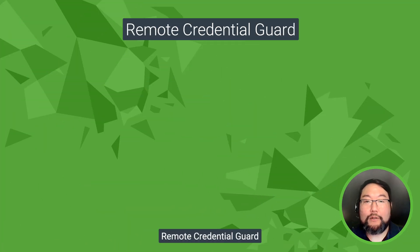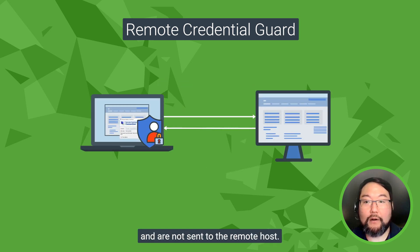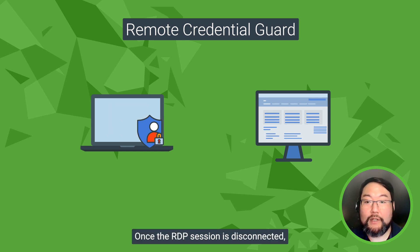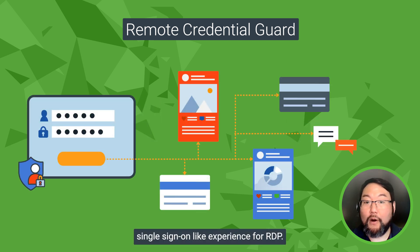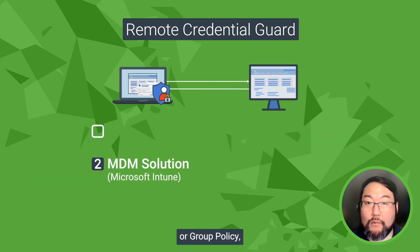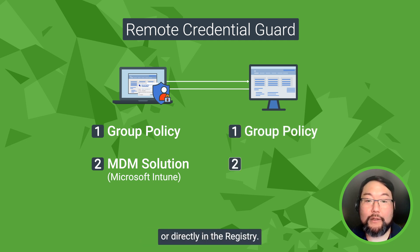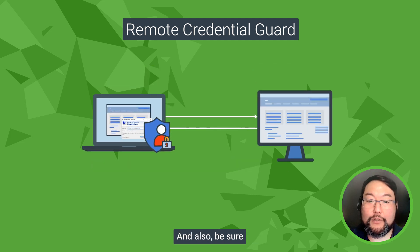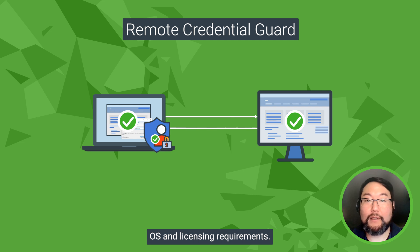To recap: Remote Credential Guard helps protect your credentials for RDP sessions. Credentials remain on the client device and are not sent to the remote host. It uses Kerberos only. Once the RDP session is disconnected, your credentials can no longer be used by an attacker on the remote host. It provides a single sign-on like experience for RDP. Clients can be configured using an MDM solution like Microsoft Intune, Group Policy, or not at all. The host can be configured using Group Policy or directly in the registry. Be sure to verify that your client, your host, and your user account meet Microsoft's OS and licensing requirements.